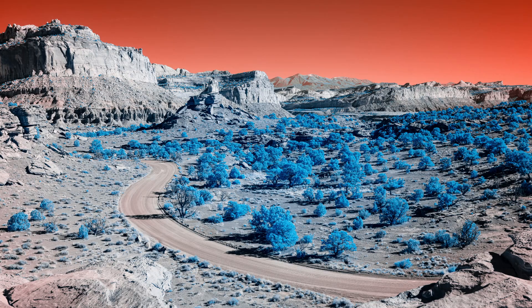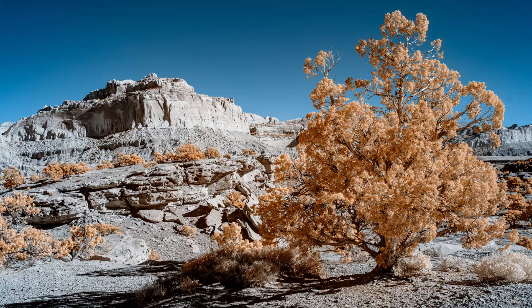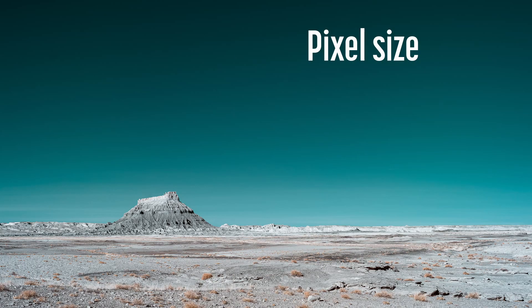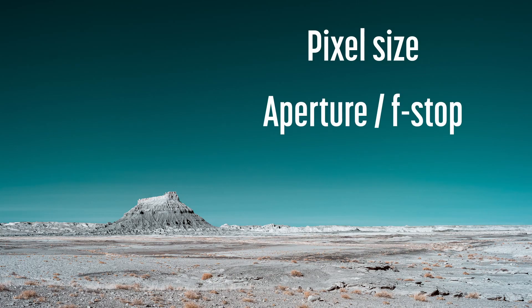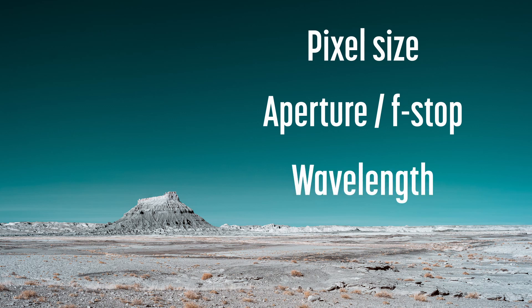Image sharpness is impacted by many factors: lens quality, sensor size, focus, depth of field, and diffraction. Diffraction is always present — it's just a matter of whether it will be visible. There are three factors that determine whether diffraction is visible: the sensor's pixel size, the lens aperture or f-stop, and the wavelength of light being captured.